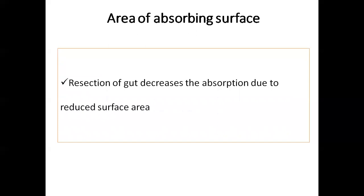Next is the area of absorbing surface. The better absorption takes place in the small intestine because it has a larger surface area. However, in some patients who have undergone gut resection, the length of the small intestine is decreased, which reduces the surface area and thereby decreases the rate of absorption. So the area of absorbing surface affects the rate of absorption.